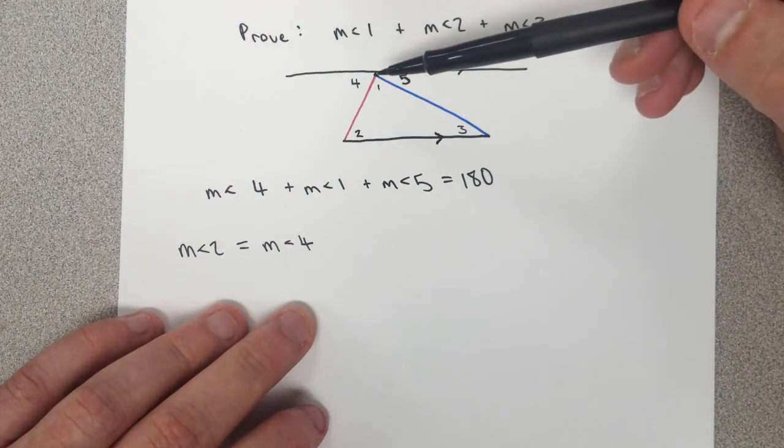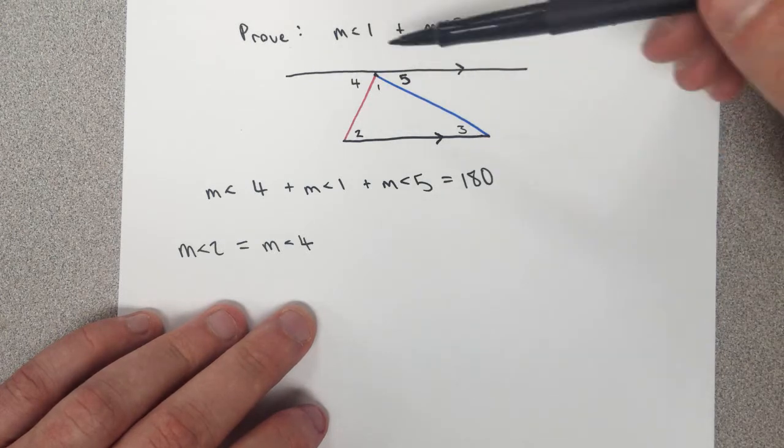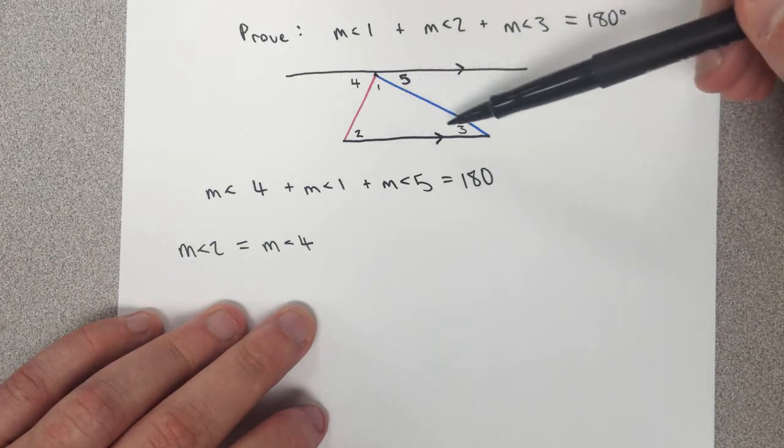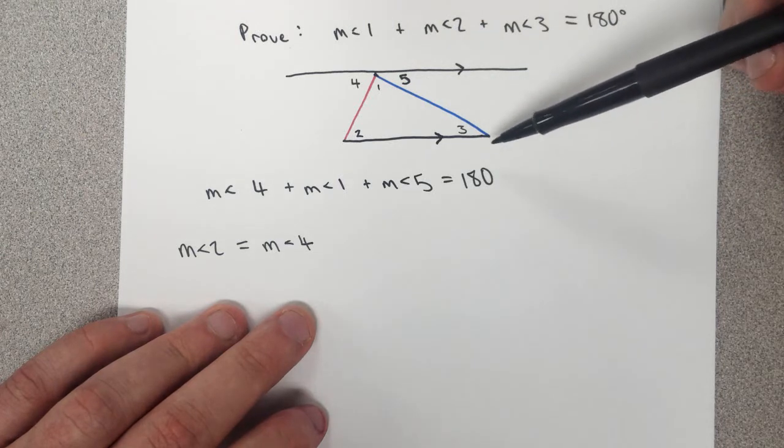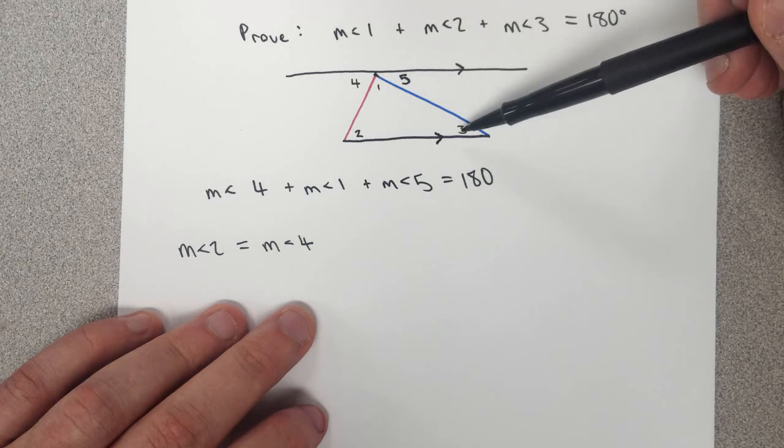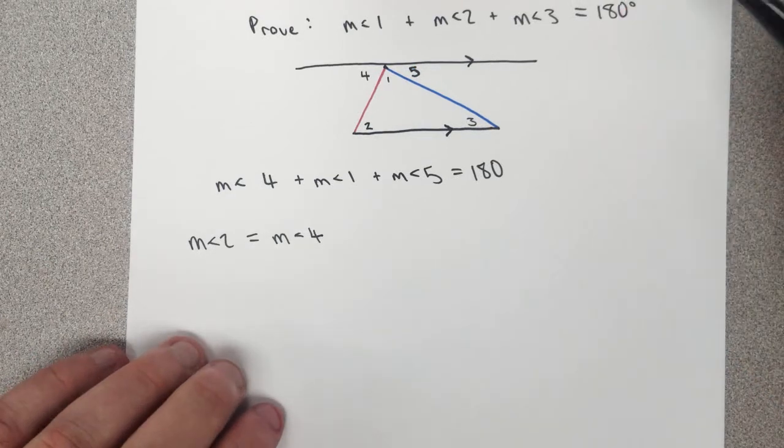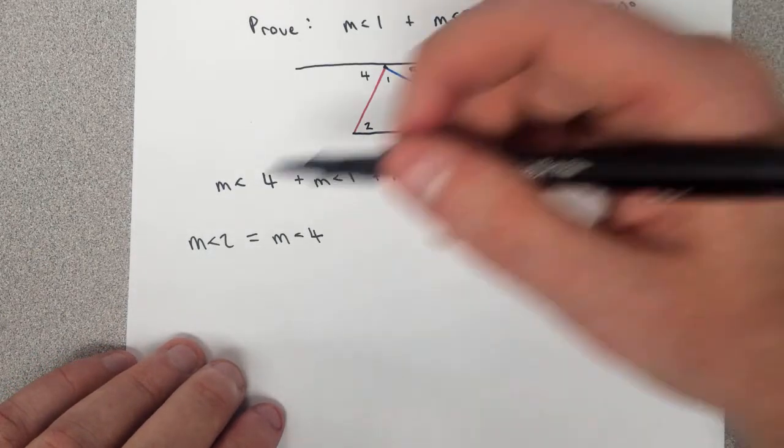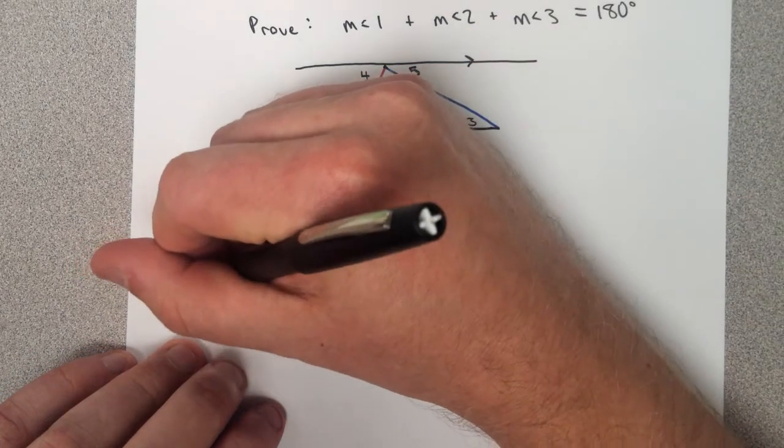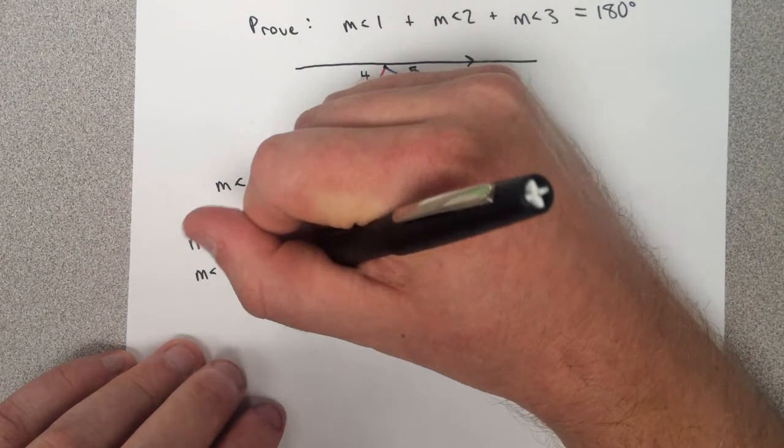And we could do a similar thing with this blue line. If we look at the black lines as our parallel lines and the blue one as a transversal, then we see that we have the same relationship here with 3 and 5. These are also alternate interior angles, which are congruent when lines are parallel and they're cut by a transversal. So I could also claim that the measure of angle 3 is equal to the measure of angle 5.